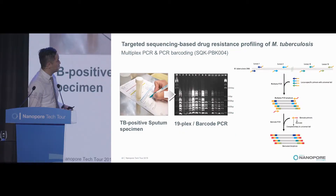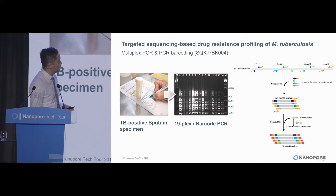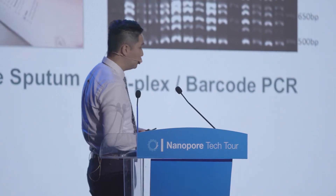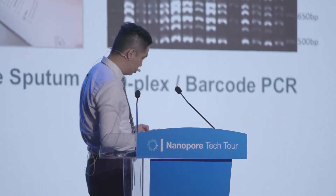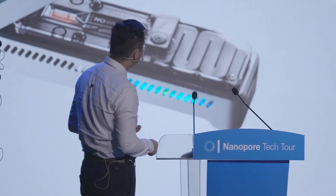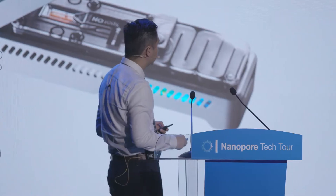When we design the PCR, we are very careful. In addition to the target-specific regions, we have a universal tail at the 5-prime end. So after the multiplex PCR, these amplicons can be used as a template for the barcode PCR, and after two PCRs, you're ready for nanopore sequencing.